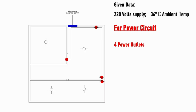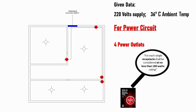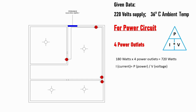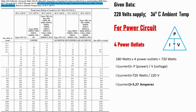For the power circuit, NEC states that each single receptacle shall be considered at no less than 180 watts rating. Having 4 outlets: 4 × 180 = 720 watts. Applying Ohm's law: Current = Power ÷ Voltage = 720 watts ÷ 220 volts = 3.27 amperes. With the same ambient temperature correction factor at 36°C of 0.82, we get 12.3 amperes adjusted ampacity.